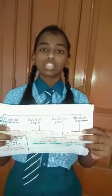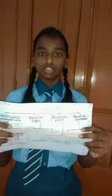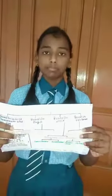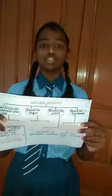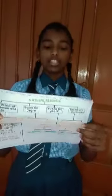Second, based on origin, there are two resources: biotic and abiotic. Biotic resources are living resources, such as human beings and animals. Abiotic resources are non-living resources. Example: soil, rock, land, water.